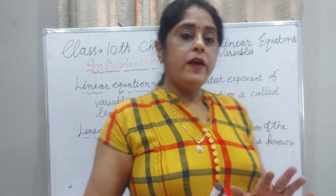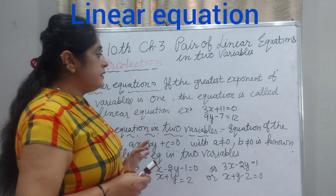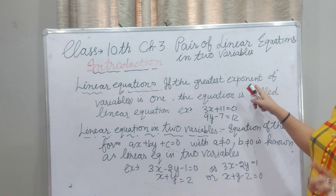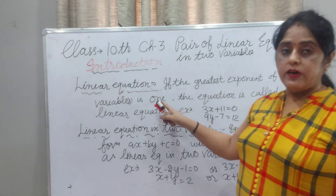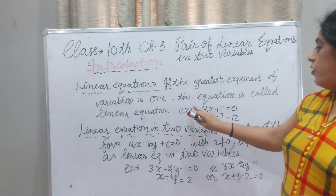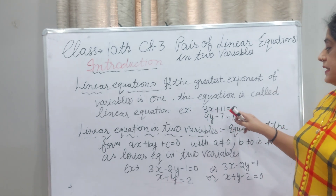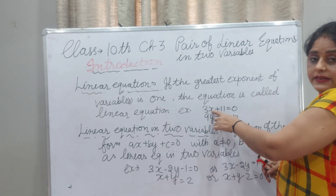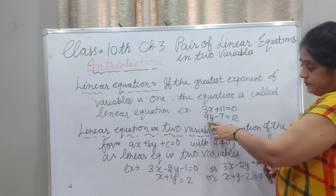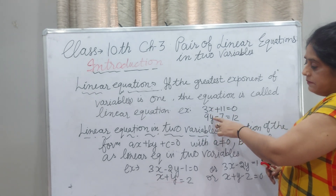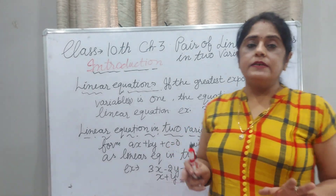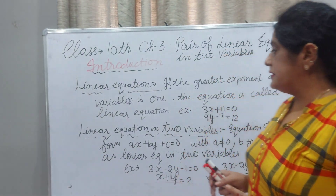Now I will tell you about a linear equation. If the greatest exponent — means power — of the variable is 1, then the equation is called a linear equation. For example, 3X + 11 = 0; X has no written power so the maximum power is 1. Or 9Y — Y is a variable with power 1 — so that type of equation is called a linear equation.